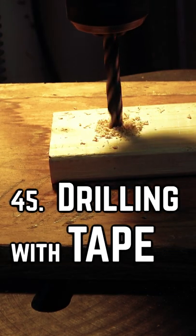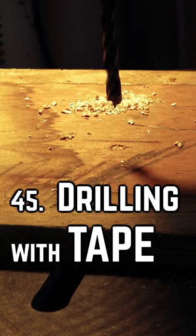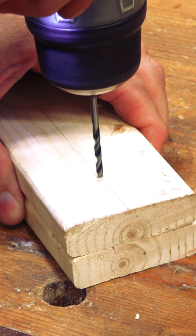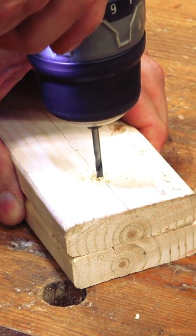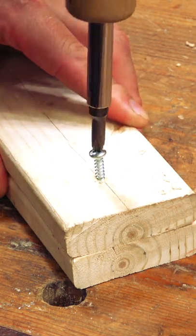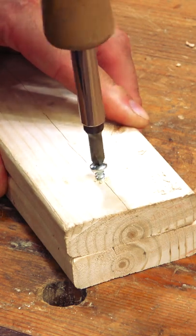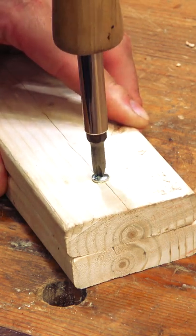Drilling a hole doesn't always mean creating an opening on both sides of the stock. Sometimes we're looking to drill a hole only so deep. Adding a screw to attach a board is a perfect example of this. We want to create a pilot hole, but only want it to go so deep.